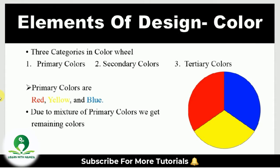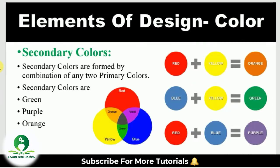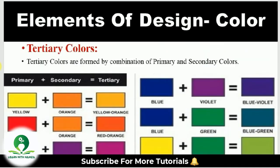All the colors we see are made by the combination of the primary colors red, yellow, and blue. Secondary colors are those formed by the combination of any two primary colors. Secondary colors are green, purple, and orange. If we mix red and yellow, orange is obtained; if we mix blue and yellow, green is obtained; and if we mix red and blue, purple is obtained.